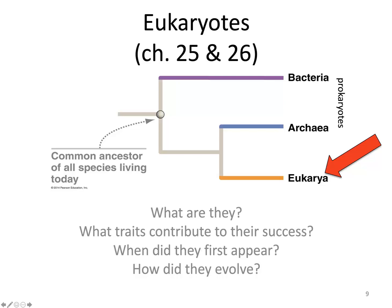For this lecture, we're moving on to the next major domain, which is the eukaryotes or the eukarya. There are three major domains: the bacteria, the archaea, and the eukarya. When I say domains, I'm talking about the largest taxonomic group — domains are even above kingdoms.